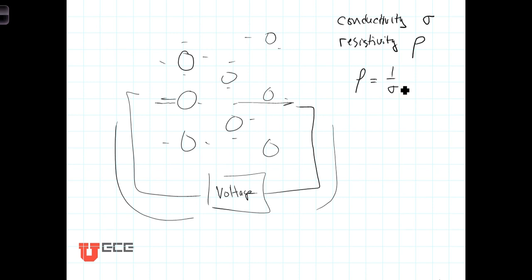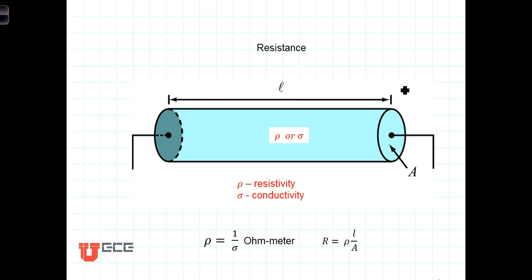And we use materials to make electrical devices. Resistivity and conductivity are properties of the materials themselves, out of which we're going to make the devices.